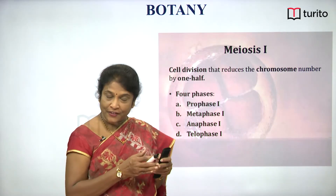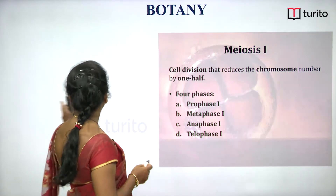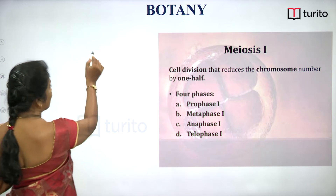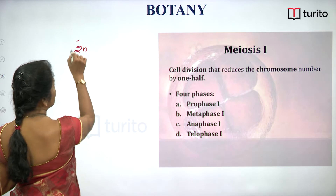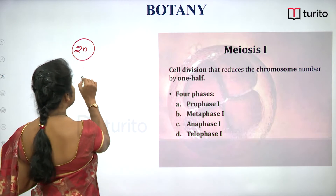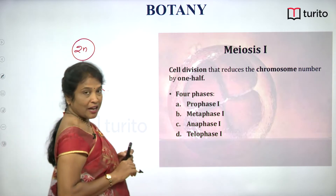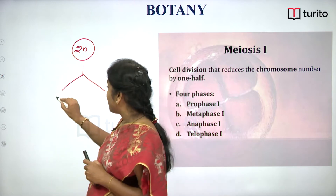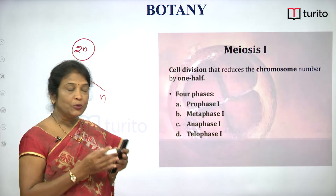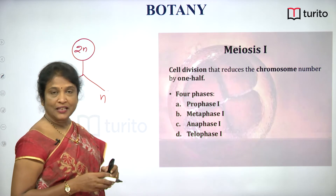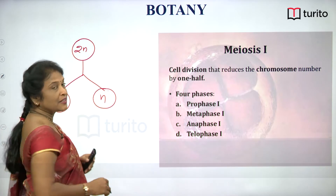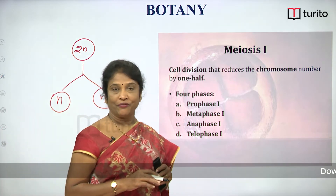Meiosis one is the first meiotic division. The parent nucleus, which is the meiocyte (diploid), undergoes the first meiotic division — meiosis one. As a result, it divides into two daughter nuclei. During this process, segregation of chromosomes occurs: the two sets of chromosomes in the parent nucleus get separated, and the daughter nuclei get only one set of chromosomes, becoming haploid.